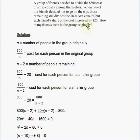Usually when a question asks how many friends were in the group originally, that means that's going to be your variable. So label N as the number of people in the group originally — that's what you need to find, that's what the question asks.